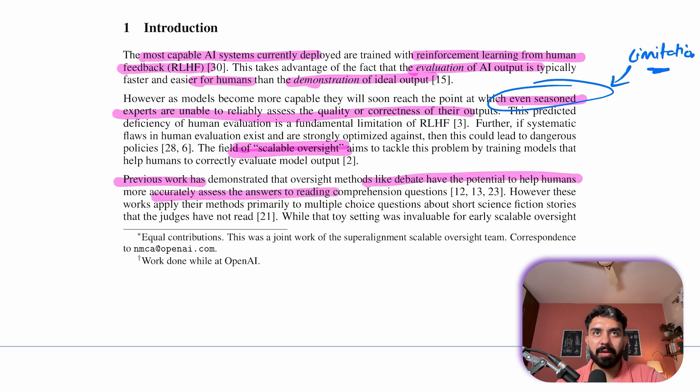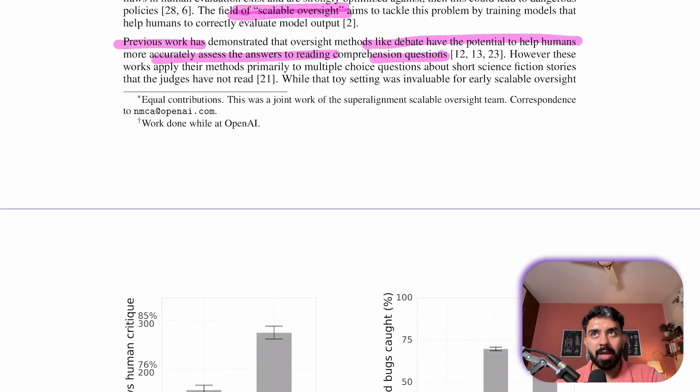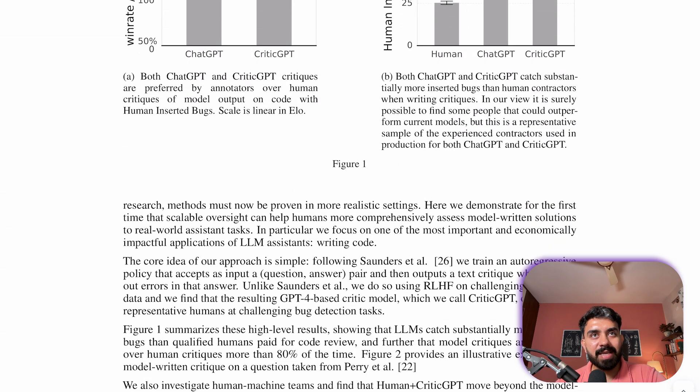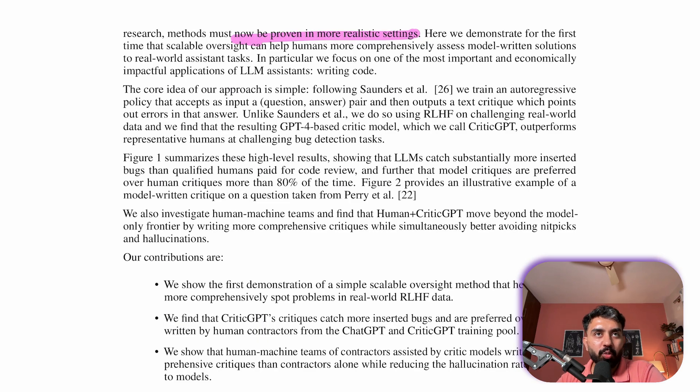And previous research has shown that methods like debate can help humans better assess answers to reading comprehension questions, but now it's time to assess these models in more realistic settings. So how can scalable oversight help humans assess model written solutions to real world tasks?